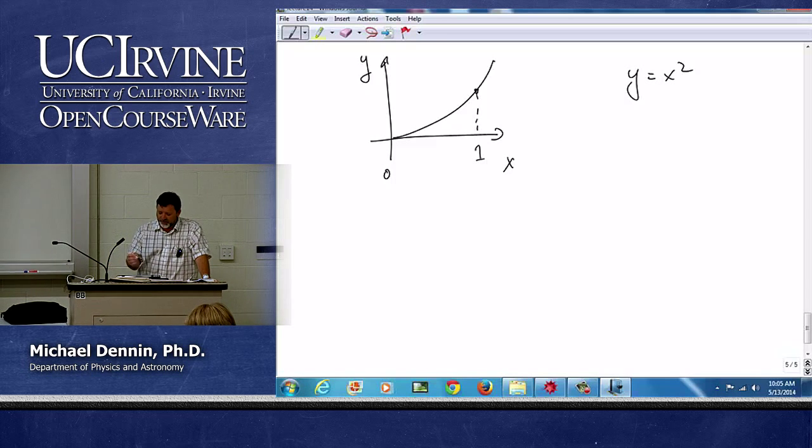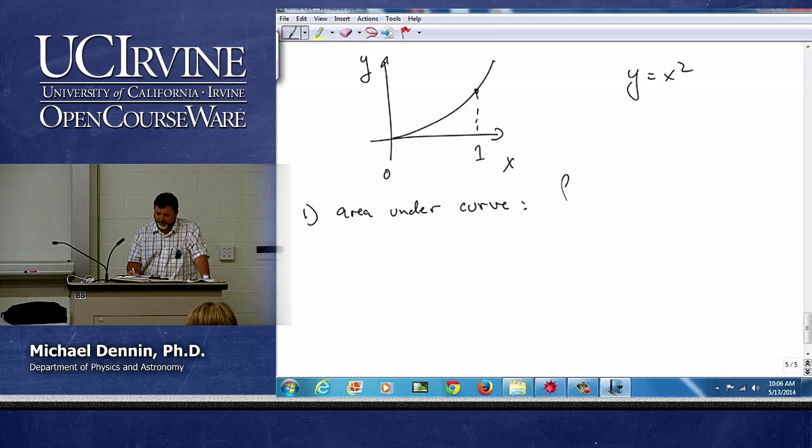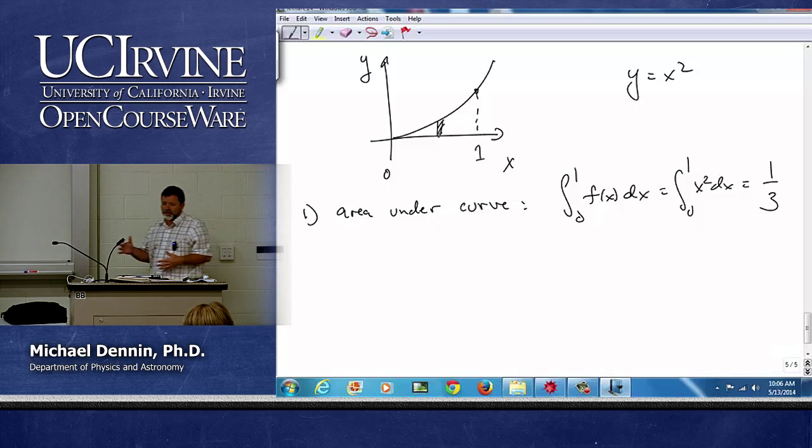Now, the first thing you've learned about, just to beat a dead horse, was you're used to doing the area under the curve. And I'm going to put it up here just to distinguish it from the line integral. That's simply the integral from zero to one of f dx, which in this case is the integral from zero to one of x squared dx, which is one-third. And that's adding up little pieces of area as we go along.